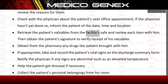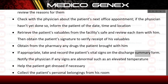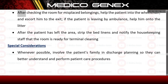Retrieve the patient's valuables from the facility's safe and review each item with the patient, then obtain the patient's signature to verify receipt. Obtain from the pharmacy any drugs the patient brought with them. Take and record the patient's vital signs on the discharge summary form. Notify the physician if any signs are abnormal, such as an elevated temperature. Help the patient get dressed if necessary, collect personal belongings from the room, check the room for misplaced items, help the patient into the wheelchair, and escort to the exit. If leaving by ambulance, help onto the litter. After the patient leaves, strip the bed linens and notify housekeeping that the room is ready for terminal cleaning.